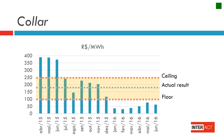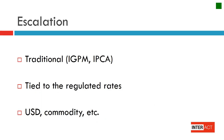The collar arrangement is shown in this slide. The buyer and the seller agree upon a floor price and a ceiling price. For example, if the floor was established at 100 reais per megawatt-hour and the ceiling at 250 reais per megawatt-hour, every time spot prices were above the ceiling, the seller charged the buyer 250 reais per megawatt-hour. If spot prices were below the floor, the seller charged 100 reais per megawatt-hour. After slightly more than a year, the average price the buyer paid is shown in the dotted line designated as the actual result.